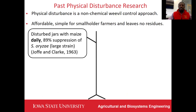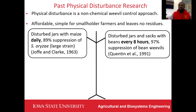Physical disturbance is actually not new. In 1963, Joffe and Clark disturbed jars of infested maize daily, achieving 89% suppression of Astrophilus oryze, also known as the rice weaver. Another study done in Michigan, Quentin disturbed jars and sacks of infested maize and infested beans every eight hours, achieving 97% suppression of the common bean weaver.